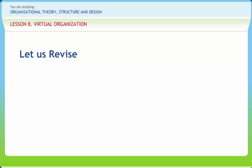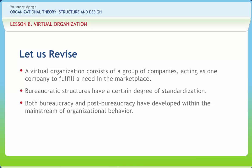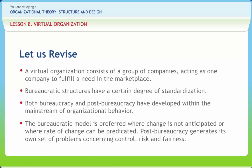Before we end, let us briefly revise what we have studied. A virtual organization consists of a group of companies acting as one company to fulfill a need in the marketplace. The emergence of the virtual organization has seen erosion of traditional hierarchical structures toward a less structured form, with traditional barriers replaced by inter-organizational processes. Bureaucratic structures have a certain degree of standardization, and both bureaucracy and post-bureaucracy have developed within the mainstream of organizational behavior. The bureaucratic model is preferred where change is not anticipated; post-bureaucracy generates its own problems concerning control, risk and fairness. Both are criticized for privileging efficiency over considerations such as ethics, and critical approaches are themselves criticized for being utopian.